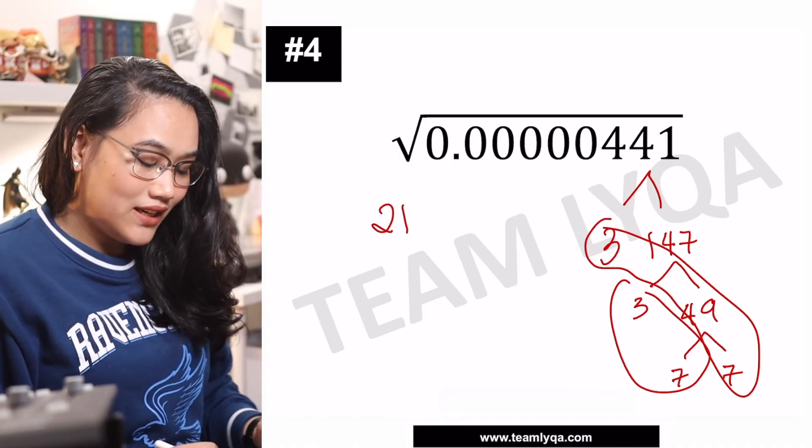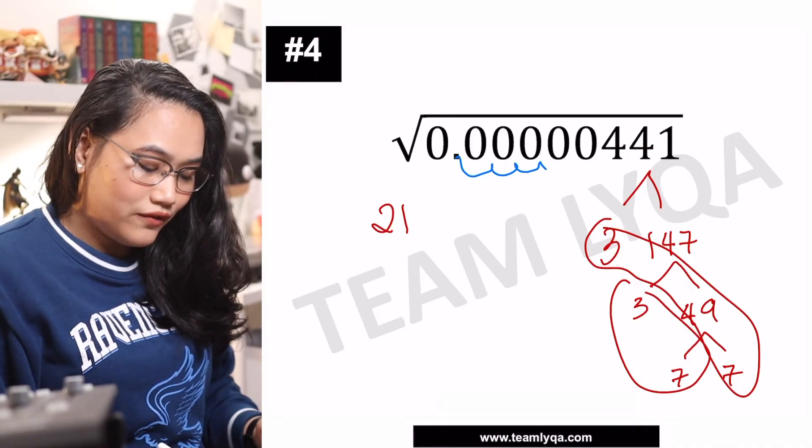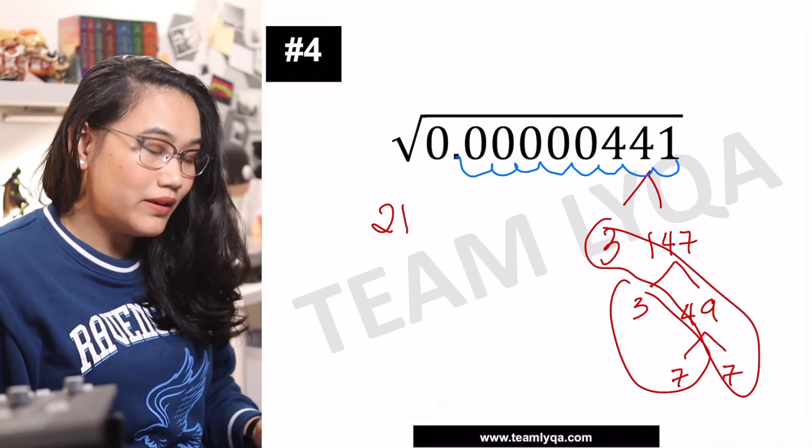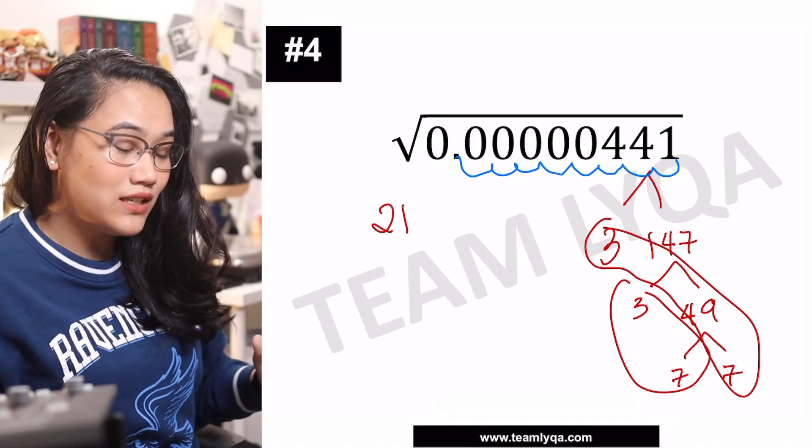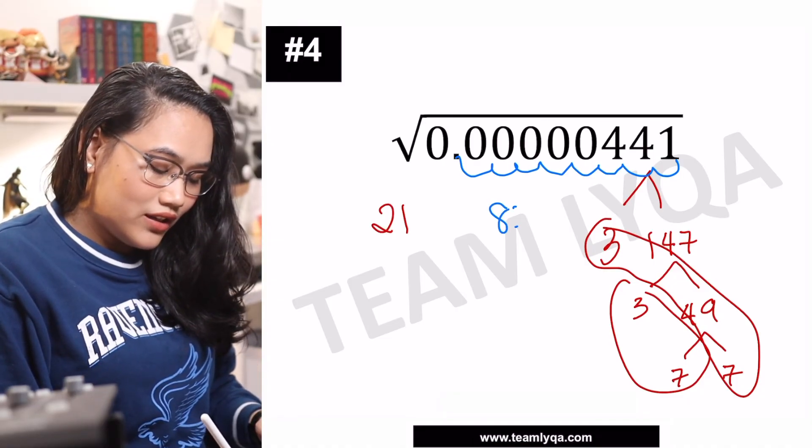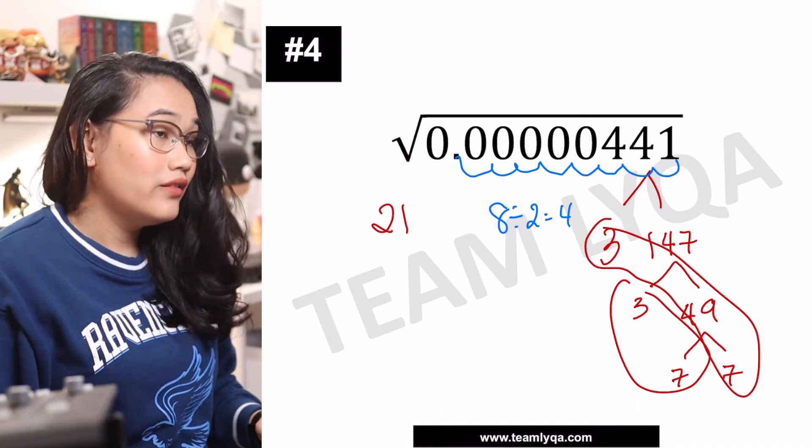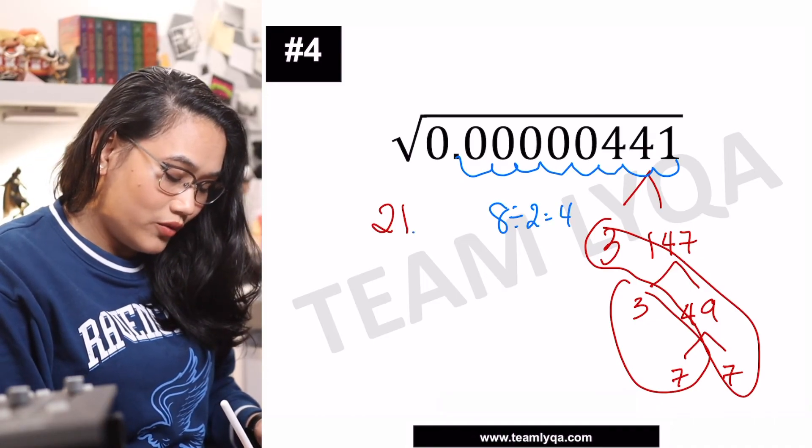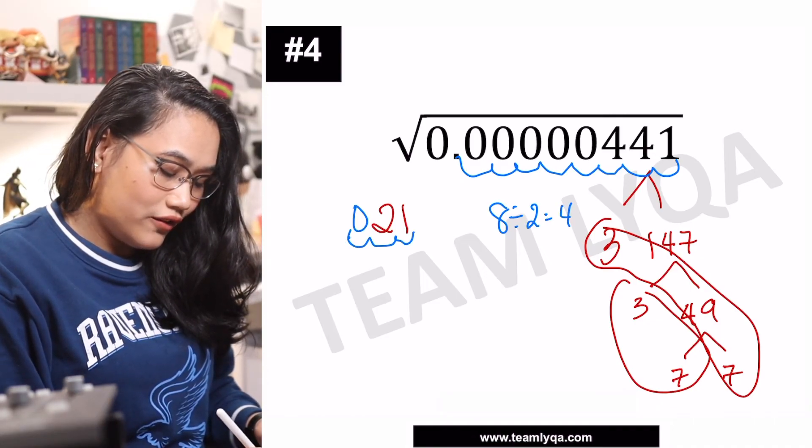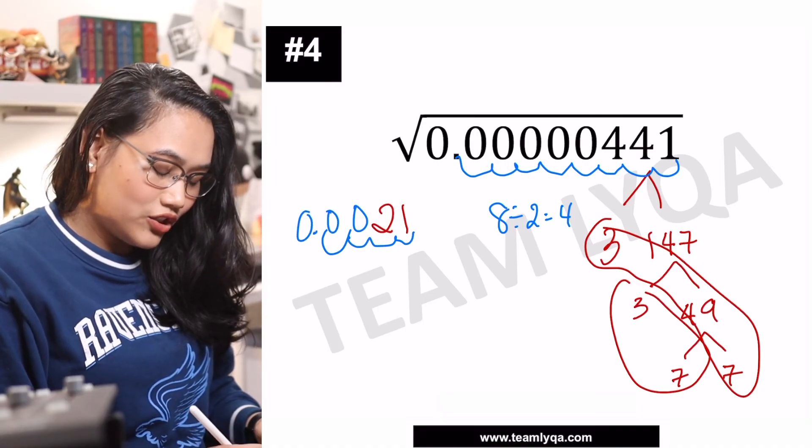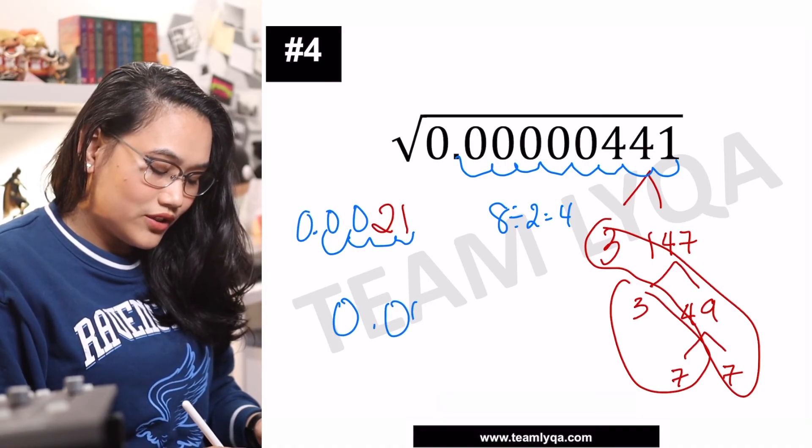Now, how many decimal places? 1, 2, 3, 4, 5, 6, 7, 8. To form 441, or to use up the decimals. So if it's 8, we'll divide 8 by 2. This will be 4. Move it 1, 2, 3, and 4. So the answer is 0.0021.